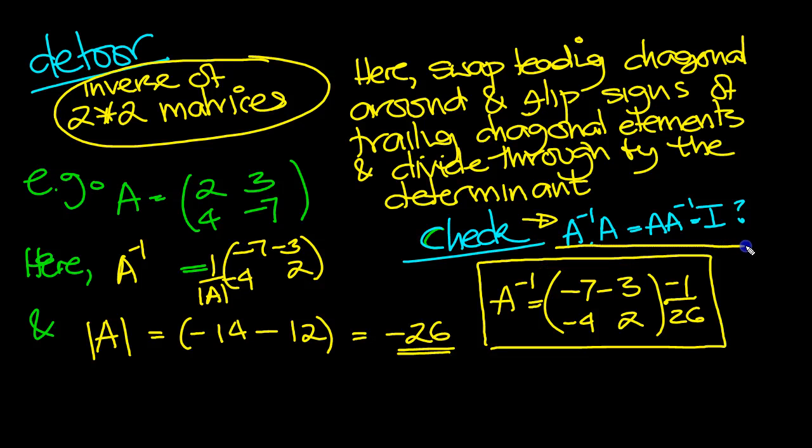And here's the check. You can always check. So at the end of a problem, if you've got some time, you can check that the inverse times itself is equal to the identity matrix. Both ways round. And it shows you haven't made a silly mistake or something.